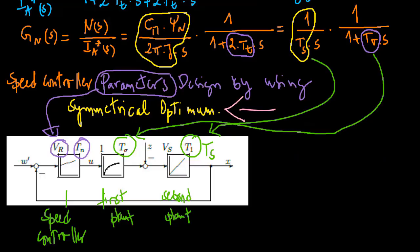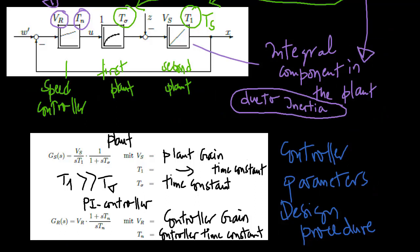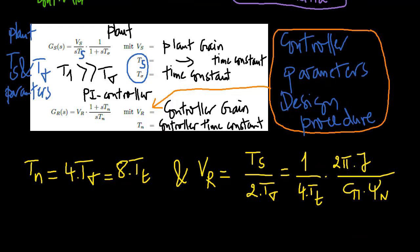The symmetrical optimum represents another important optimization criterion in electrical drive technology. It is preferably used for systems with an integrating component. With the plant parameters, the parameters of a PI controller designed according to the symmetrical optimum can easily be specified.